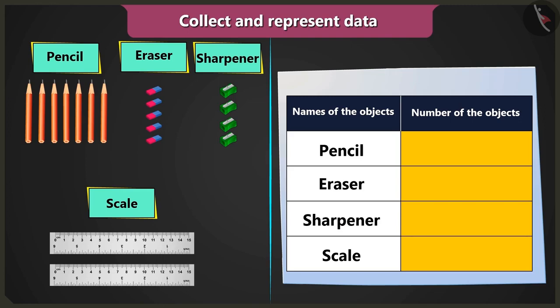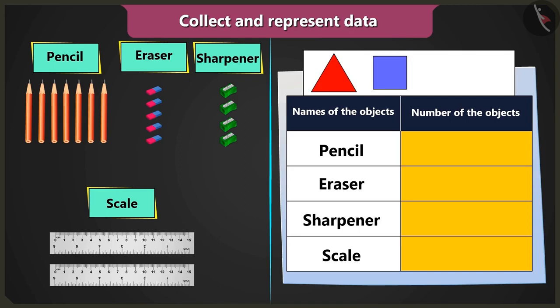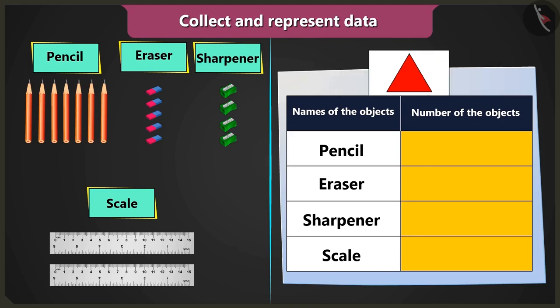And now? Now in the column count of objects, you have to draw as many triangles, squares, or circles as the number of objects. So, we will draw triangles to fill the table.